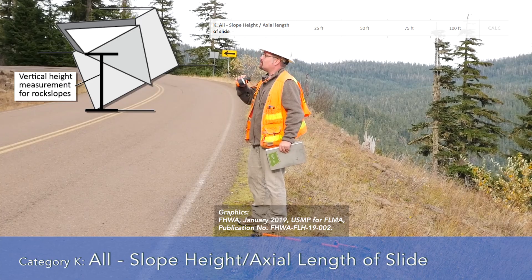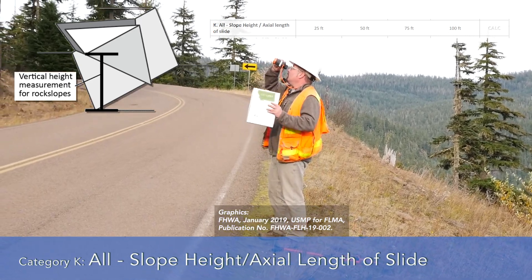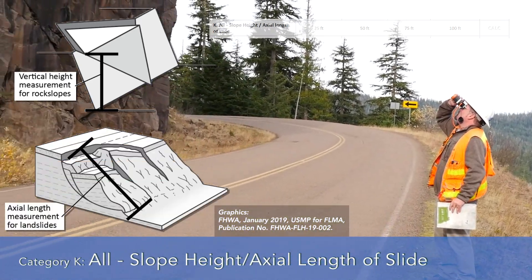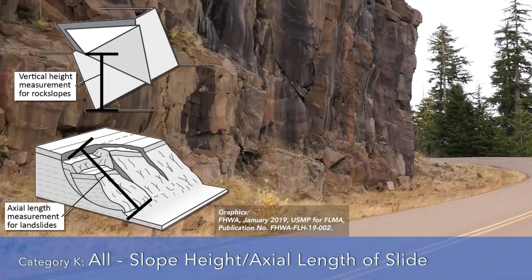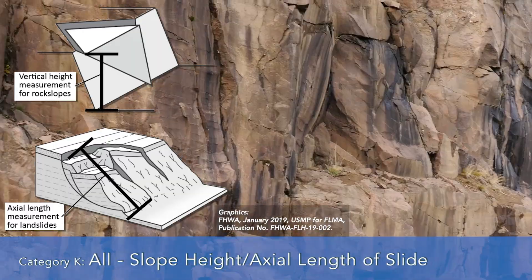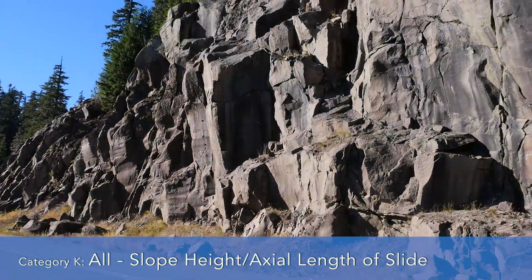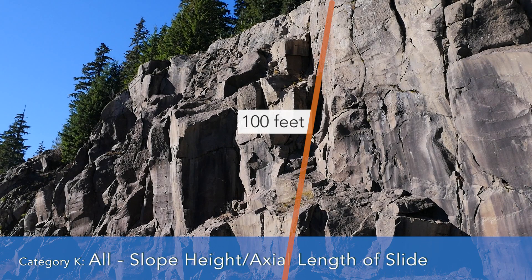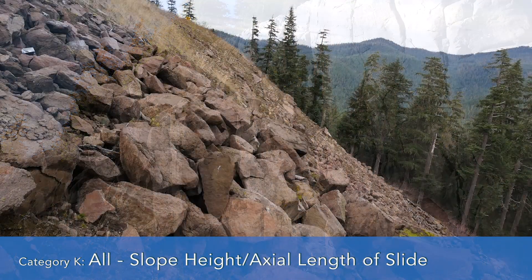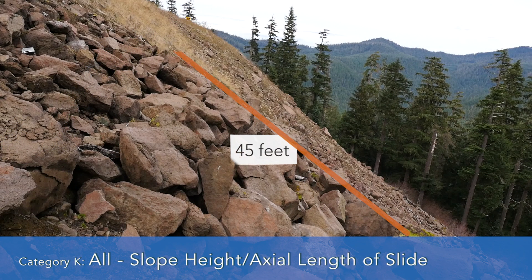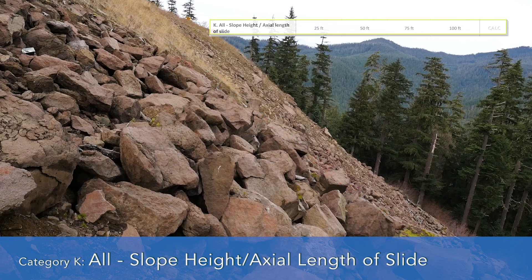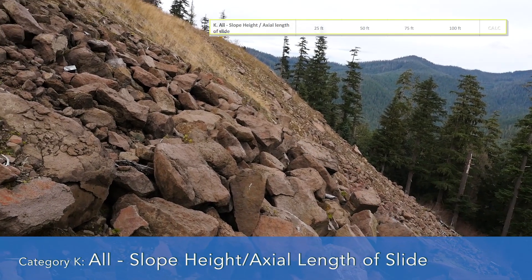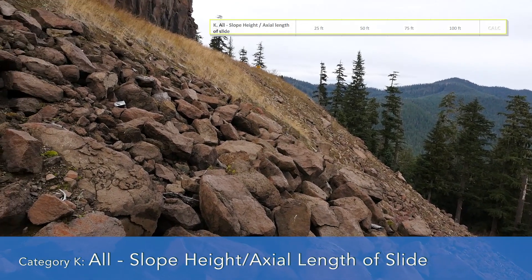Category K evaluates the slope height and axial length of the slide. As discussed earlier, we've already rated this on the beginning of the form. Here on this slope, we're over 100 feet for the rock slope and about 45 feet for the soil slope — so nine points or 100 points for the landslide or rockfall respectively.